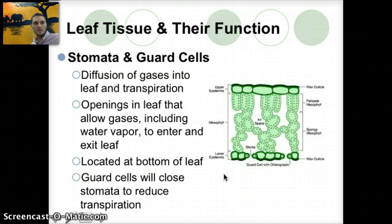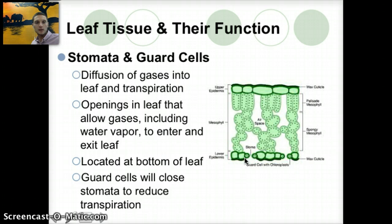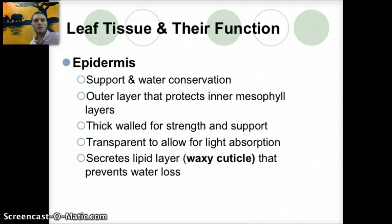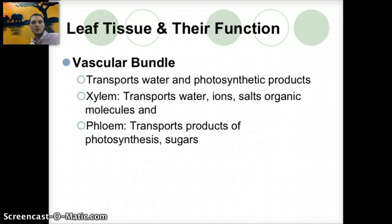Looking at the stomata and guard cells in more detail: gas needs to be able to get in and out of plant leaves, and the diffusion of these gases occurs through stomata. These are small openings on the bottom portion of the leaf, controlled by guard cells which close to help retain water, blocking gas diffusion and reducing transpiration. The epidermis layer is for support and water conservation — it has a thick wall for strength, is transparent to allow light absorption, and secretes a lipid layer creating the waxy cuticle. The vascular bundles transport water and photosynthetic products: the xylem transports water and the phloem transports sugars.